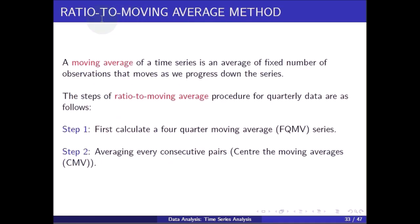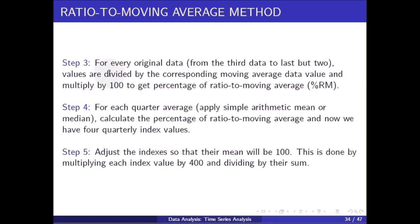Next we talk about the ratio to moving average method. A moving average of a time series is an average of a fixed number of observations that moves as we progress down the series. The steps for quarterly data are: Step 1 — calculate the four quarterly moving average (FQMV) series. Step 2 — average every consecutive pair; this is called centering the moving averages (CMV). Step 3 — divide every original data value (from the third to the last-but-two) by the corresponding moving average and multiply by 100 to get the percentage ratio to moving average (percentage RM).